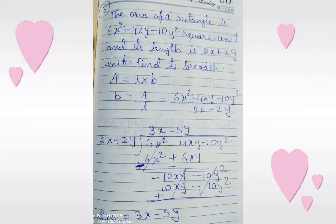We multiply 2x plus 2y with 3x and get 6x squared plus 6xy. We change the sign; after changing the sign the first term is cancelled, and after solving the second term we get minus 10xy. We copy down minus 10y squared.